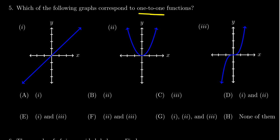When you look at graph one, we see that all horizontal lines intersect the graph only at a unique point. So this tells us that graph one is, in fact, a one-to-one function.